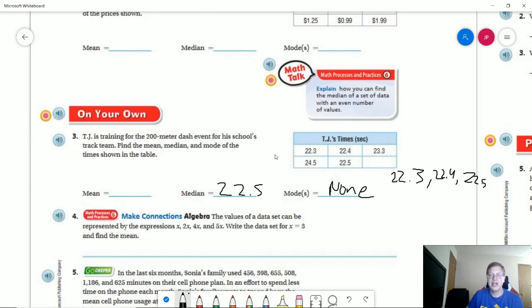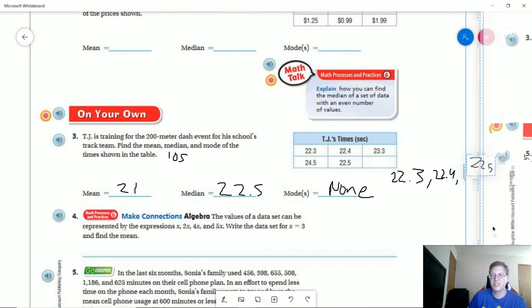And then the mean, we would go ahead and add all these together. So to save some time, I would recommend you just use a calculator. Probably save you a few moments. I'm going to try to do this in my head really quick. So 22 plus 24 is going to give us 46, 68, 70, 8, 80, 103, 104, 105. Divided by five would give us 21.